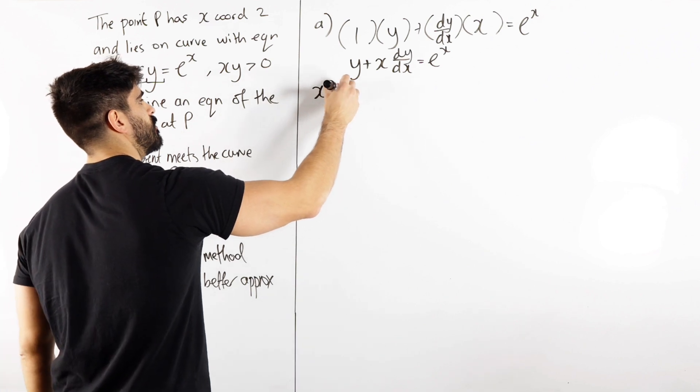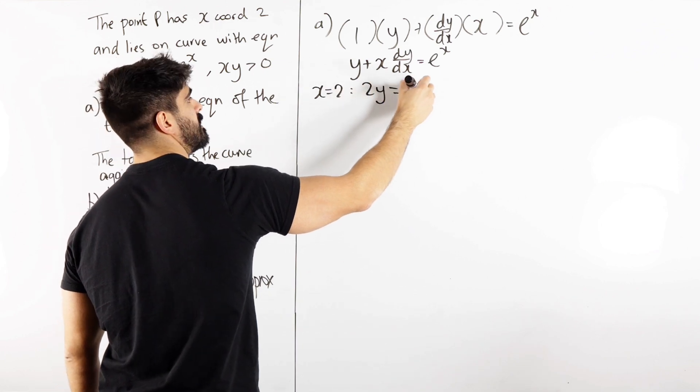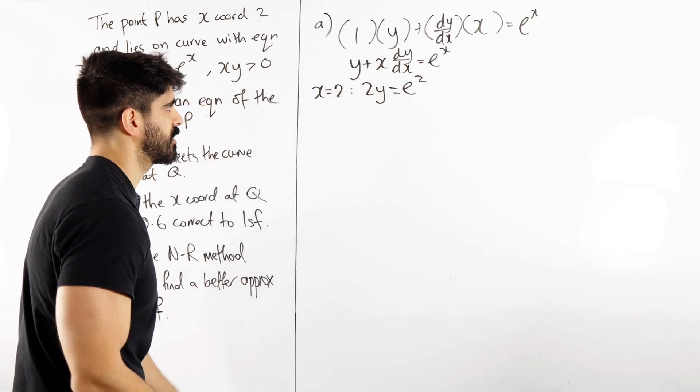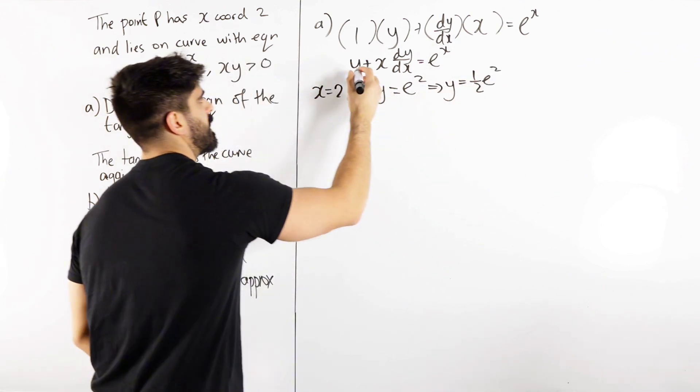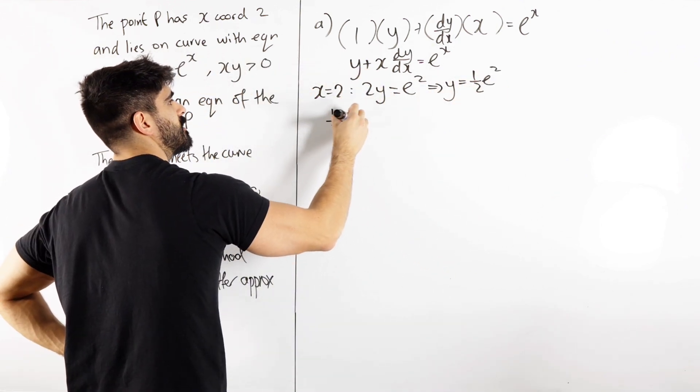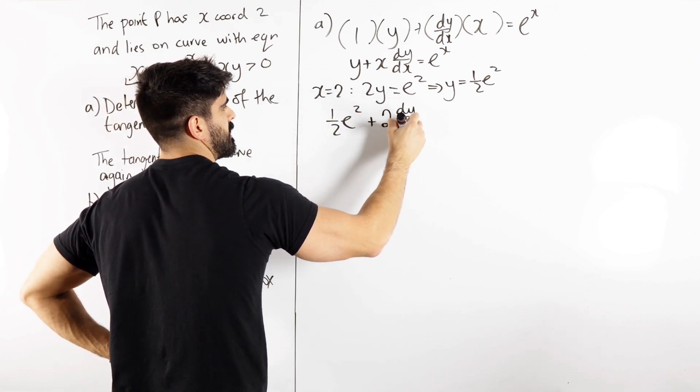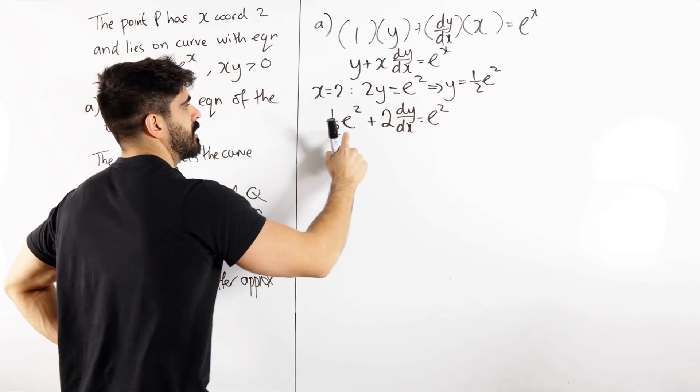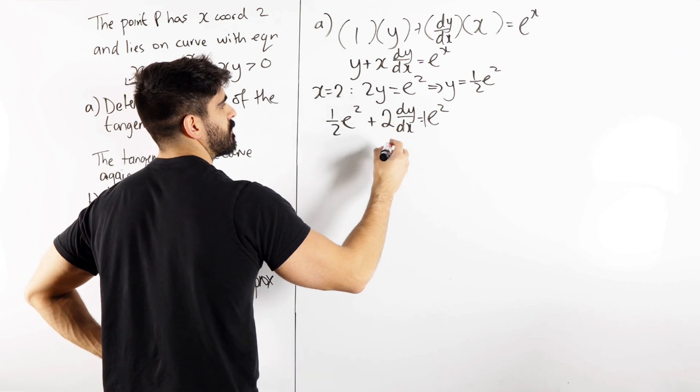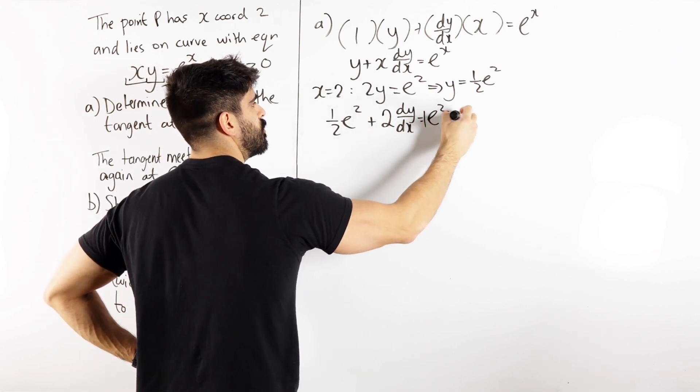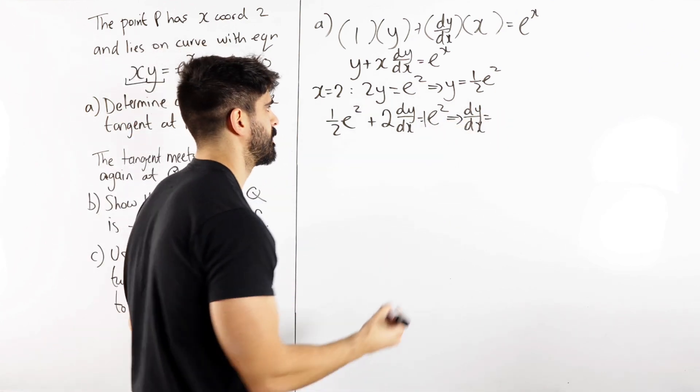So now when x is 2, we get 2y is e squared. So we just divide by 2. So y is a half e squared. Let's sub that in. So we get a half e squared plus 2 dy/dx is e squared. Move that over there. e squared minus a half e squared is a half e squared. And then divide by 2. A half e squared divided by 2 is a quarter, so a quarter e squared.